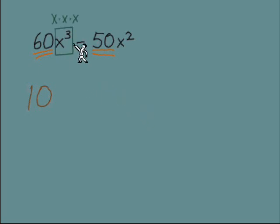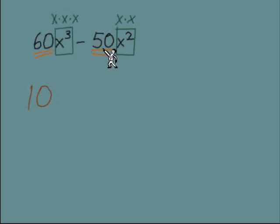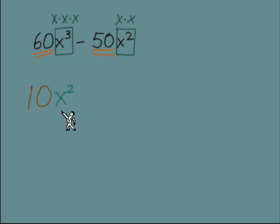Next we're going to look at the variables. From the first term we have x³, which is basically three x's multiplied together. The second term has x², two x's multiplied together. When we put the GCF out front, it's a factor we could take from both terms. The first term has a supply of three x's and the second has two x's. We can take two x's from both, so we get x² out front.